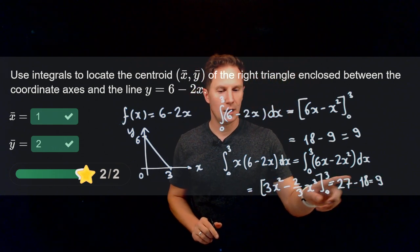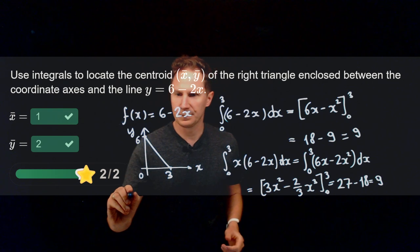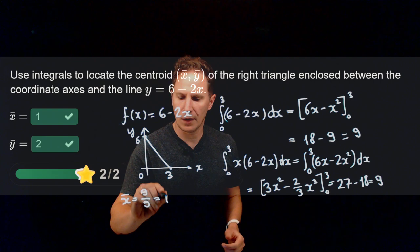So that ratio, this integral over the previous integral 9 over 9 gives us the x-coordinate of the centroid as 1.